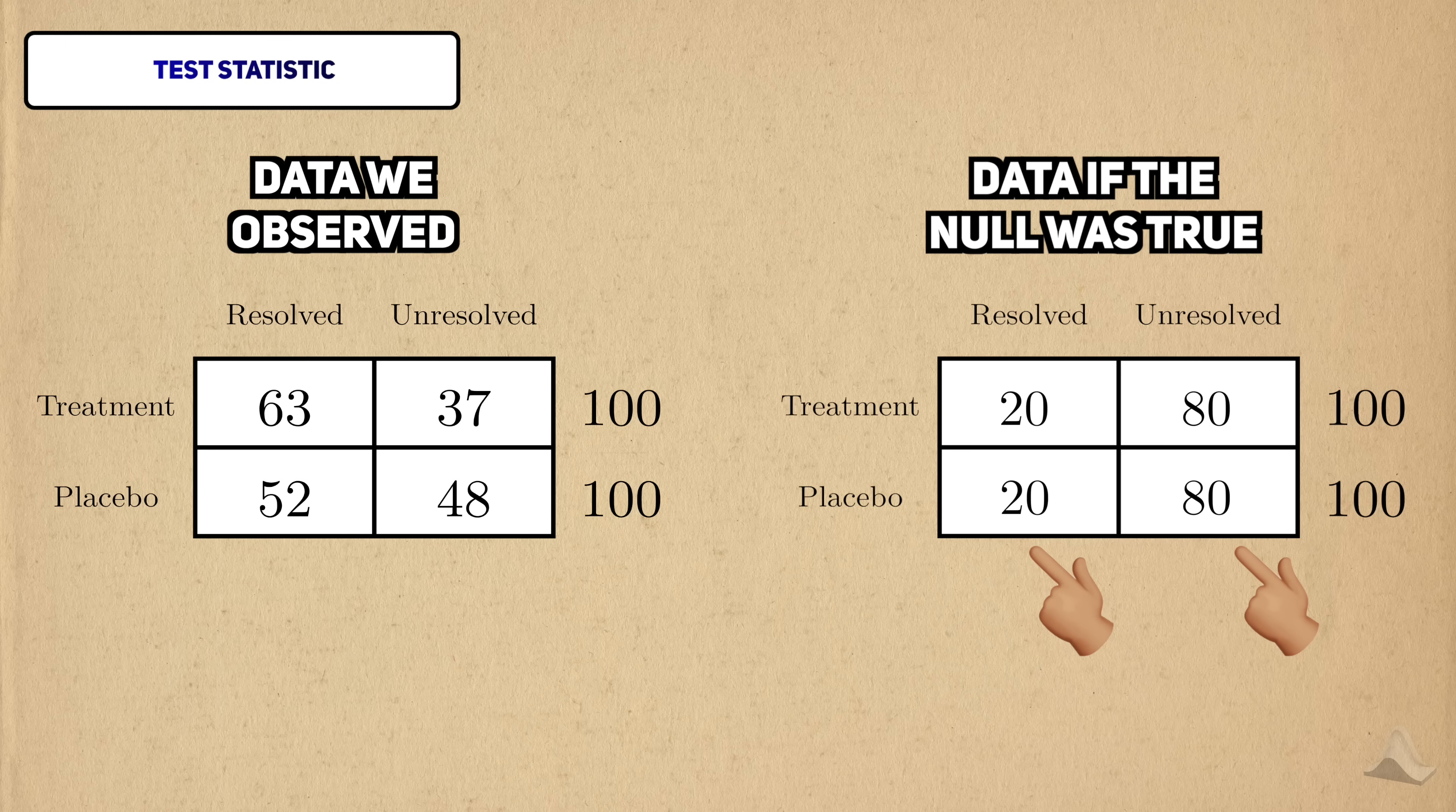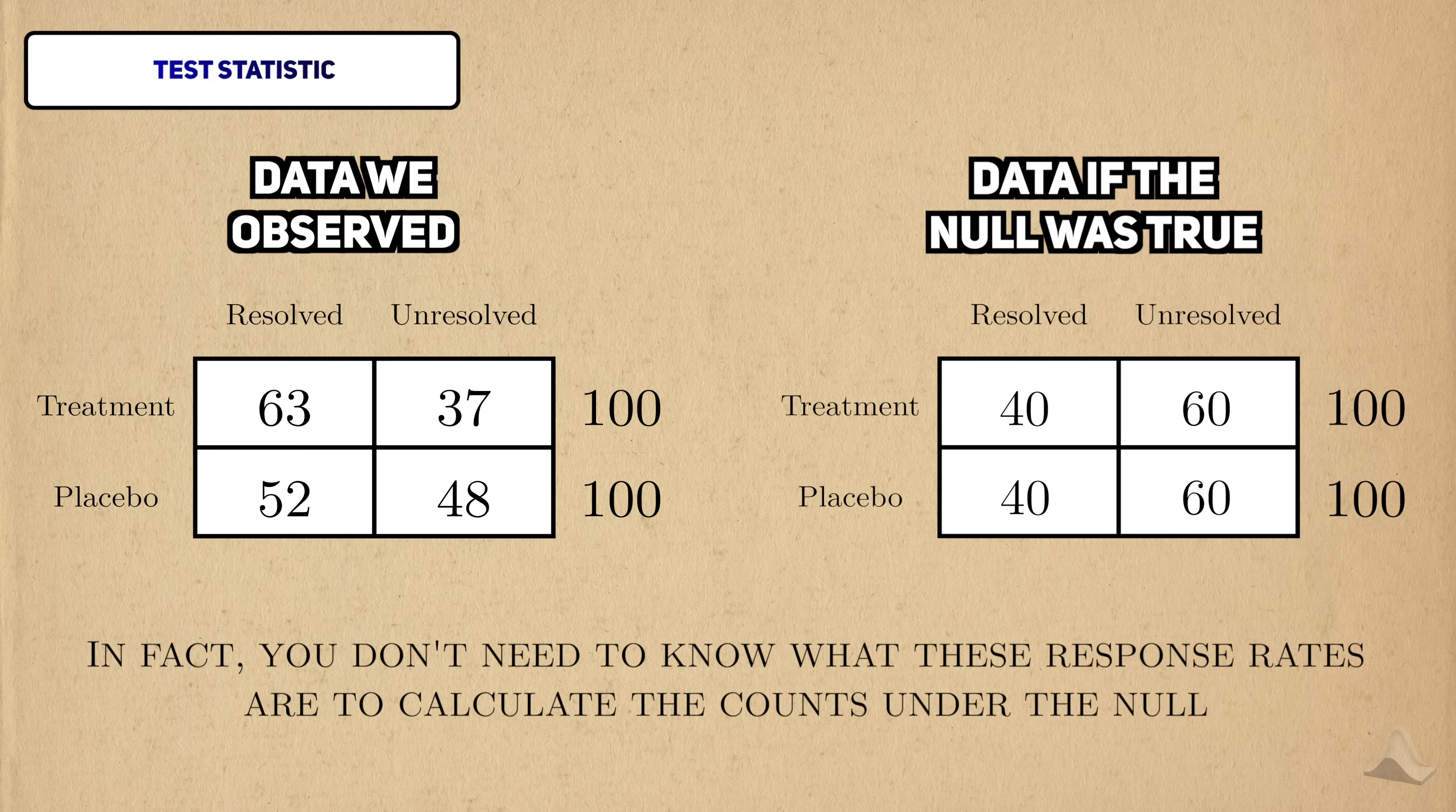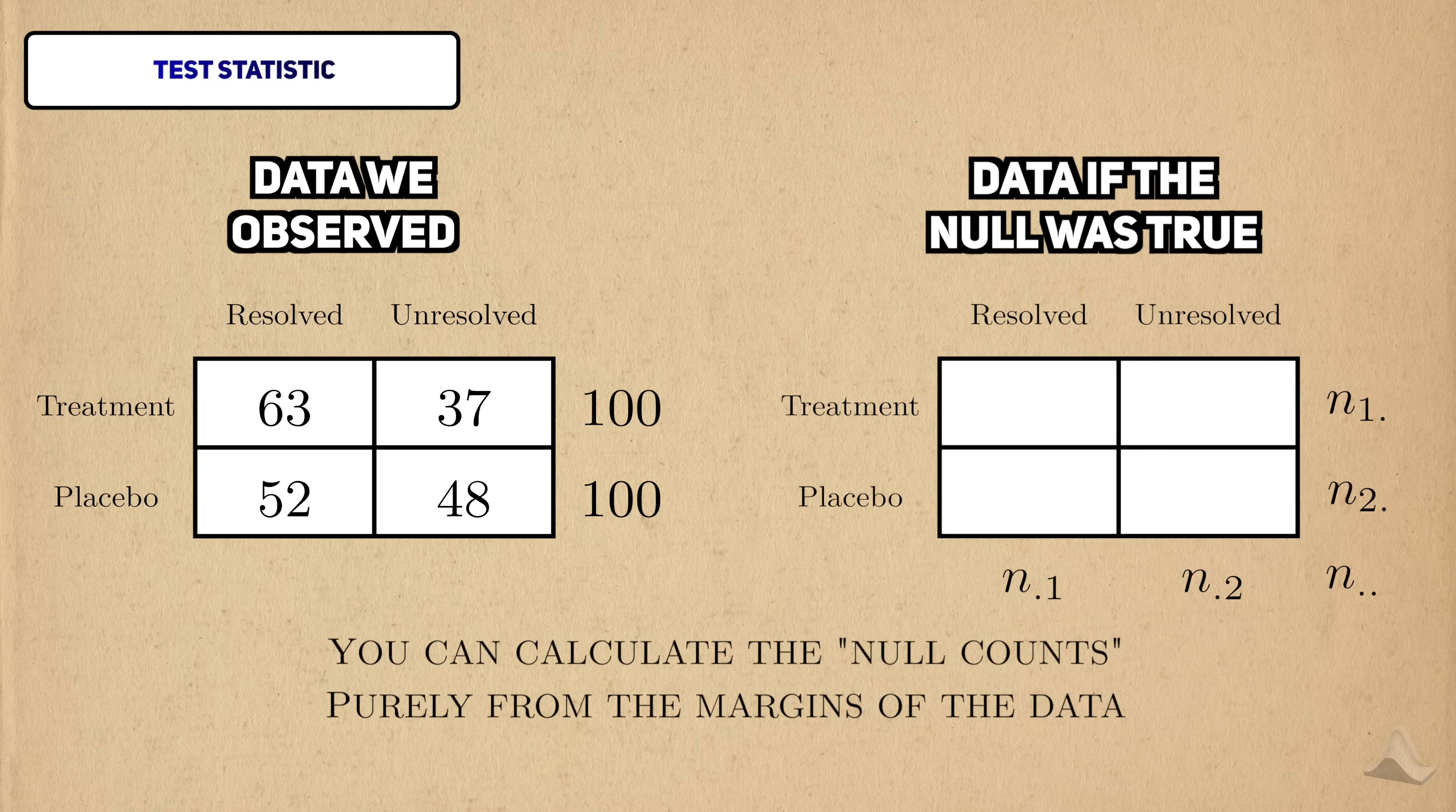It doesn't matter what the true response rate is, the fact that they're the same will produce the same counts. In fact, you actually don't need to know what the response rate is to calculate these expected counts. You can do it purely based on the margins. But you're not taking a midterm on this, so you don't need to know how to calculate it. We'll be using R to do it automatically.